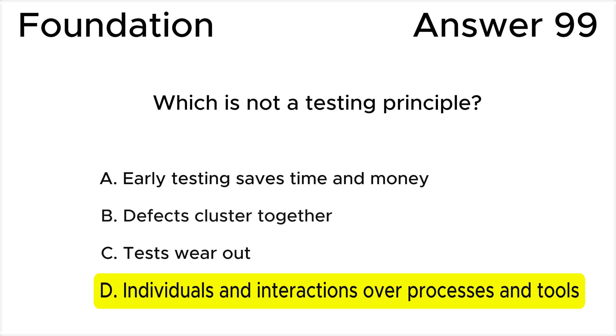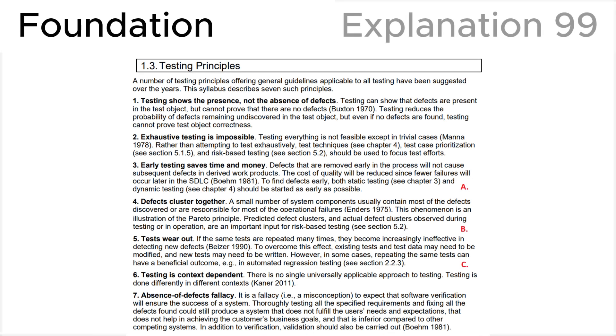All the rest of the answers are wrong. Answer A is invalid because such a test principle exists—see principle 3. Answer B is invalid because such a test principle exists—see testing principle 4. Answer C is invalid because such a test principle exists—see principle 5.